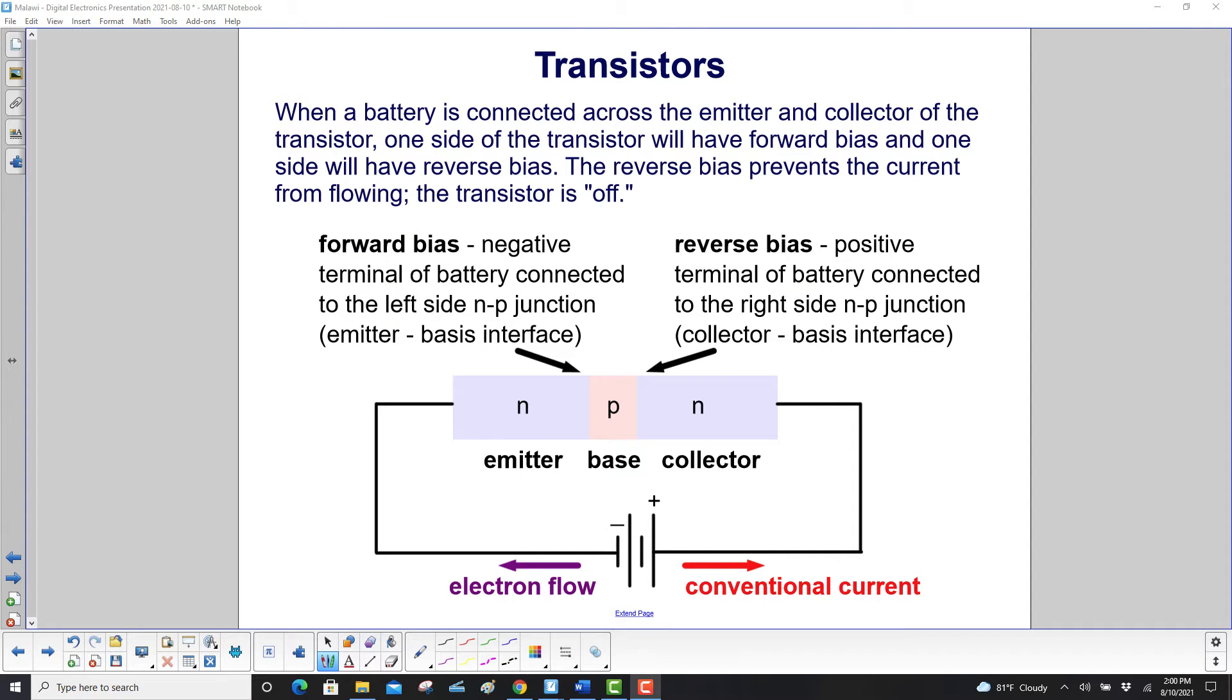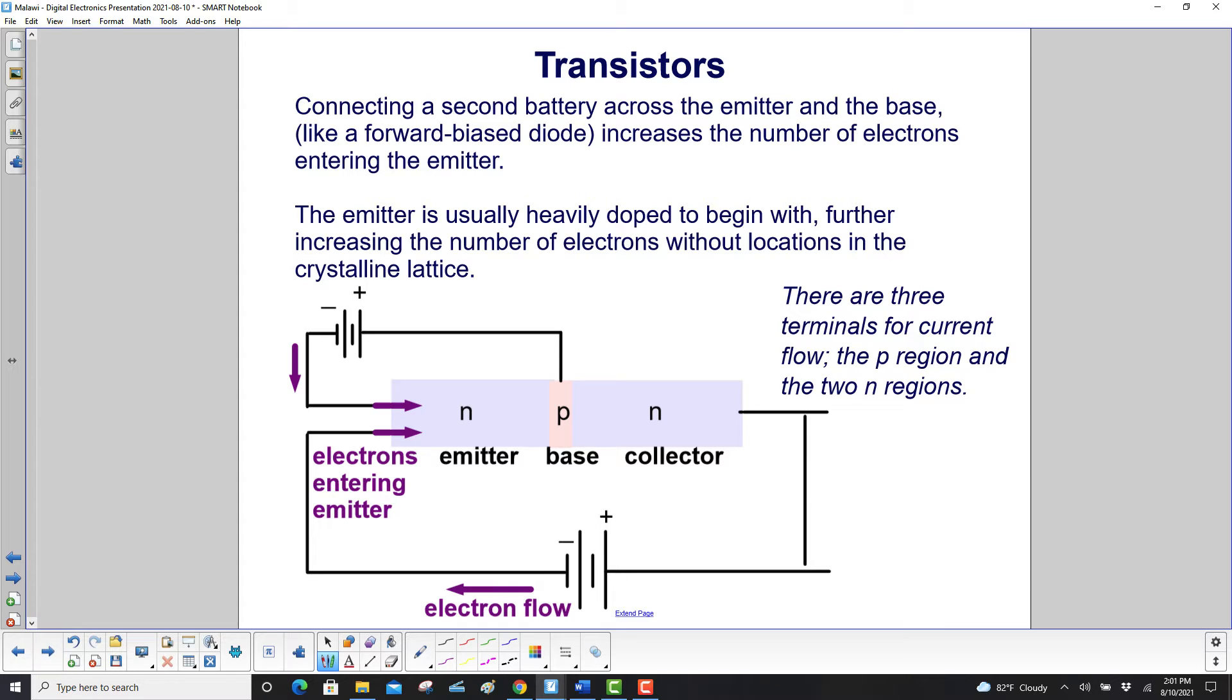When a battery is connected across the emitter and collector of the transistor, one side will have forward bias and one side will have reverse bias. The reverse bias prevents current from flowing; the transistor is off. Forward bias is where the negative terminal connects to the left side NP junction, the emitter-base interface. Reverse bias is the positive terminal connected to the right side NP junction, the collector-base interface. Conventional current flows this way, coming out of the battery. Electron flow is opposite to the direction of conventional current.